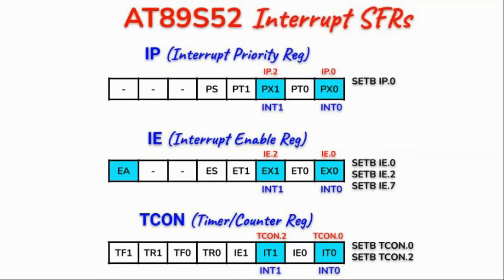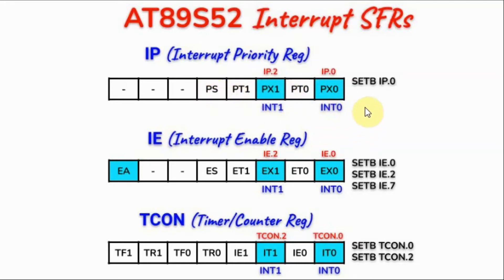We can set the priority of all interrupts within the microcontroller using the interrupt priority register. Setting the relevant bit gives interrupt 0 the highest priority; setting another bit gives interrupt 1 the highest priority. Other bits correspond to timer 0, timer 1, and the serial interrupt. As an example, if we want to give interrupt 0 the highest priority over all other interrupts, these are the assembly instructions we need to put in our code.